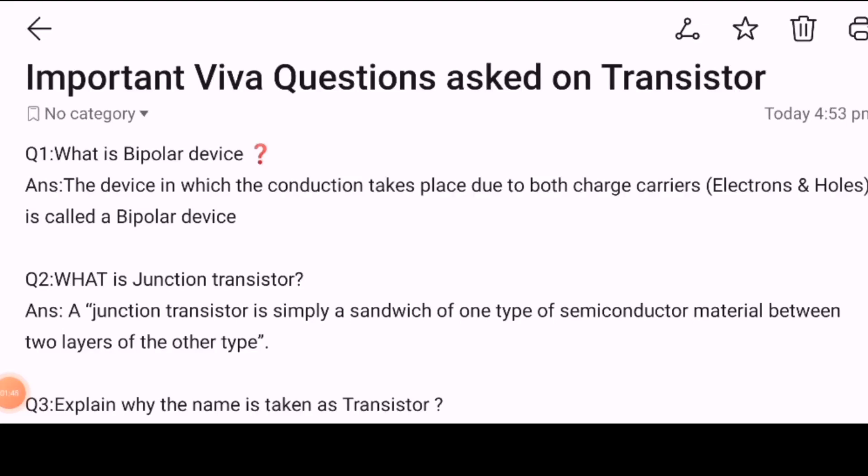Important viva questions asked on transistor. First, what is a bipolar device? The device in which the conduction takes place due to both charge carriers, that is electrons and holes, is called a bipolar device.